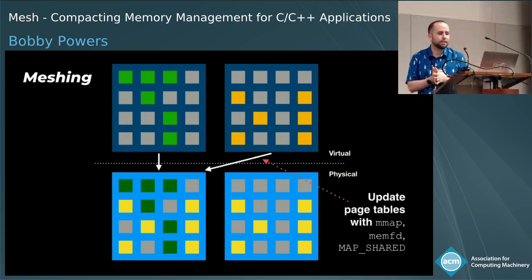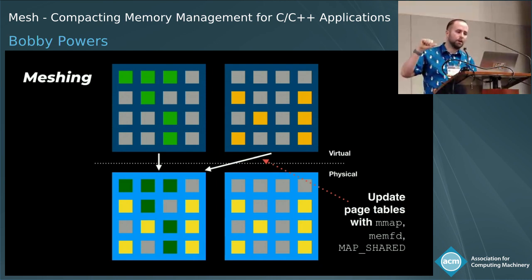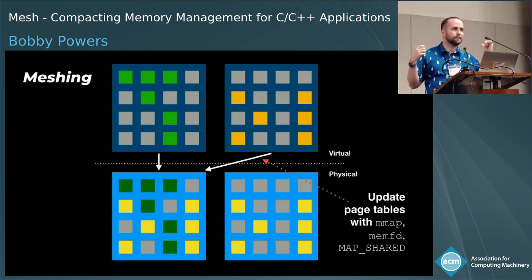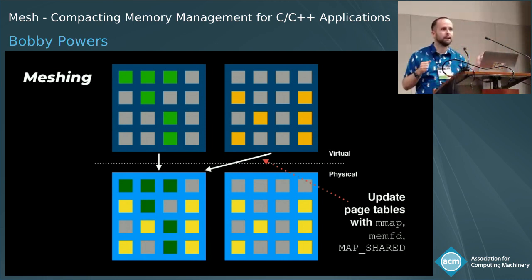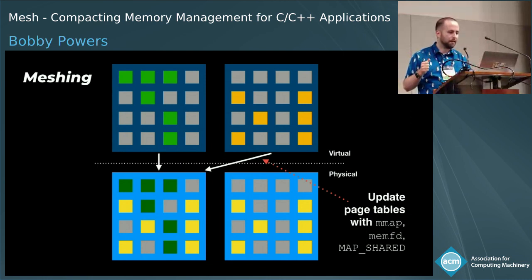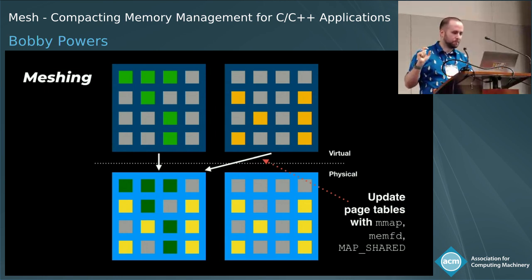Next, we update the page tables of the application with a call to mmap. This is possible because the arena we're using for the heap is an in-memory temporary file obtained from memfd_create on Linux, mapped in with the MAP_SHARED flag. The full details of this are in the paper.